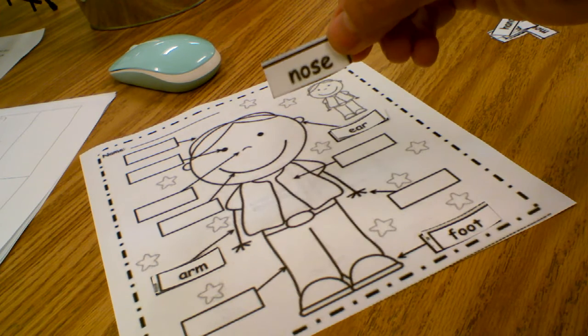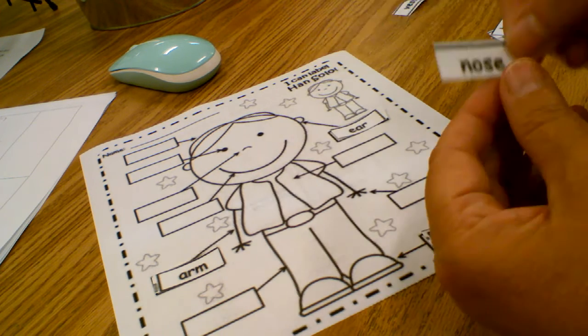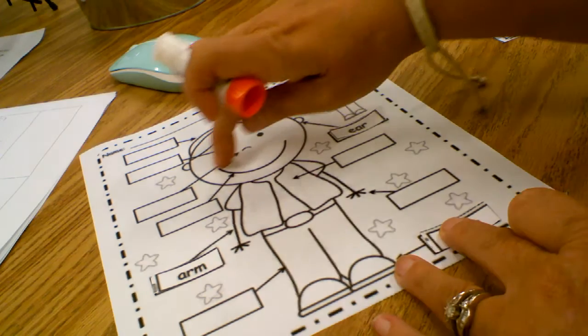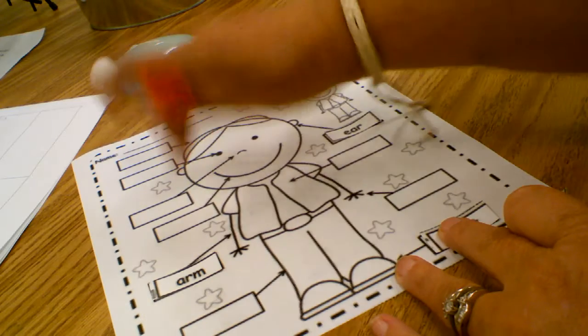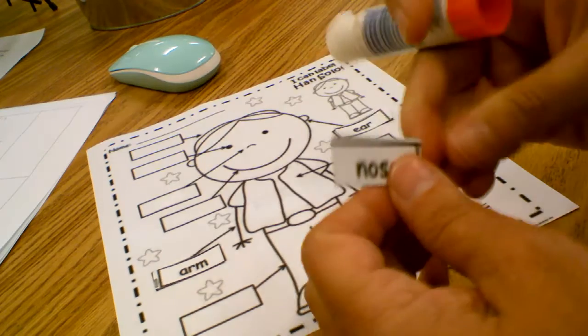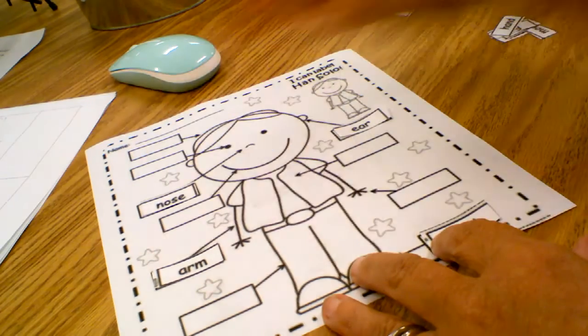Read that word. It says nose. There's the arrow pointing to the nose. So we glue it right there in that box.